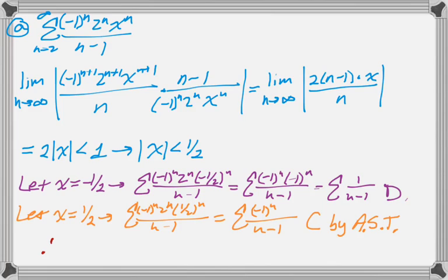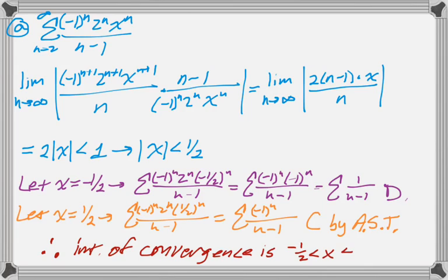So now we want to state the interval of convergence. And the interval of convergence does not include negative 1 half, so it's just less than. But it does include 1 half, so it's less than or equal to. And that's our interval of convergence.